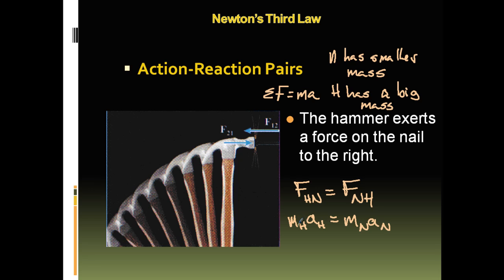The force of the hammer on nail equals the force of the nail on the hammer, which equals the mass of the hammer times the acceleration of the hammer, and equals the mass of the nail times the acceleration of the nail. Now if MH is bigger than MN, that means AH has to be smaller than the acceleration of the nail. Let's say the hammer is 3 kilograms and the mass of the nail is 1 kilogram. If the force equals 12 Newtons, the acceleration of the hammer has to be 4 meters per second squared. The nail's acceleration has to be 12 meters per second squared. Because it has a bigger acceleration, that's why it goes into the wall.